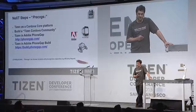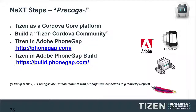There is another set of steps I call precogs — if you are a fan of sci-fi, you know that precogs are Philip K. Dick mutants with precognitive capacities, as seen in Minority Report. These steps do not depend only on porting Cordova to Tizen. We would like Tizen to become a core platform of Cordova, build a Cordova community around Tizen, have Tizen in Adobe PhoneGap, and have Tizen in Adobe PhoneGap Build.